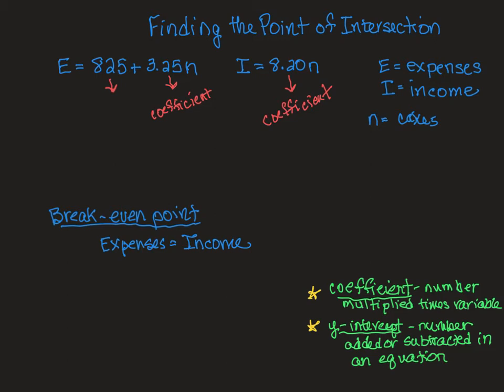In the expenses formula, 825 is the y-intercept. It is the y-intercept. It is the number you are adding in the equation. Now, in this equation, 825 is first, but it's still the added part of the equation. Because it's something added beyond what is going on with that variable.